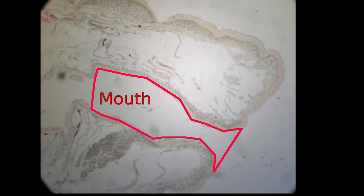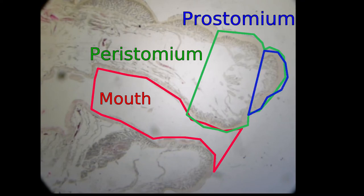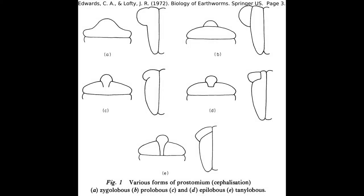First off we can start with the gastrointestinal tract. The worm's mouth opens on the first section called the peristomium. Earthworms have a bit of tissue overhanging the mouth called the prostomium. This small protrusion and its anatomical relation to the peristomium can be a useful aid in speciating worms.